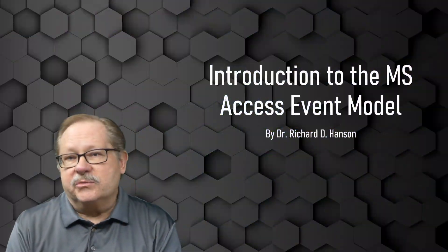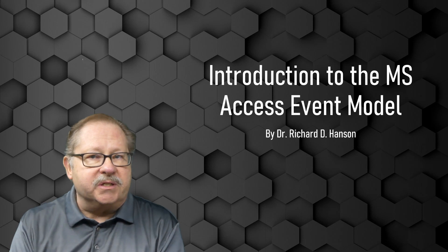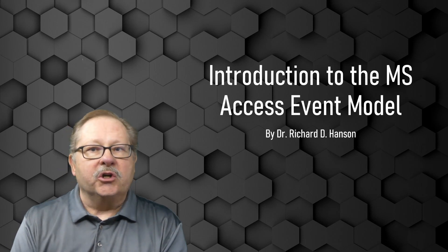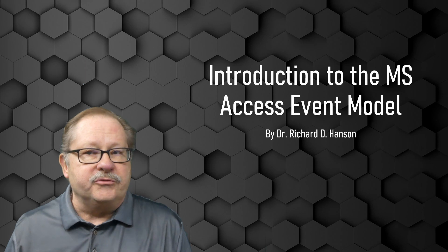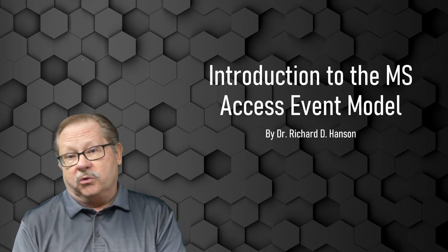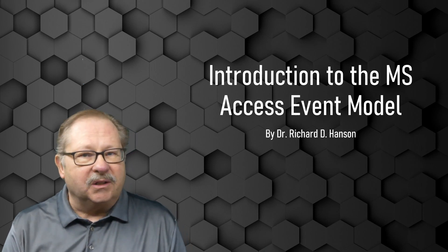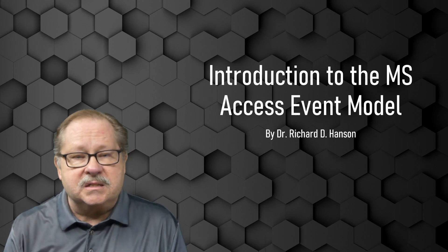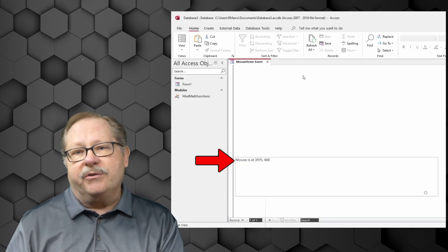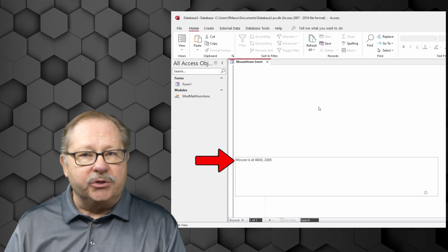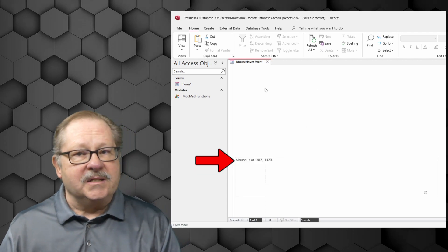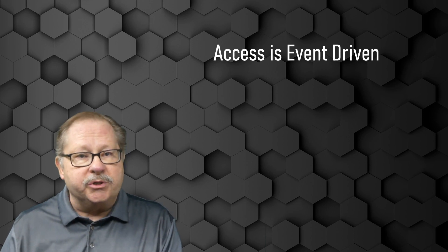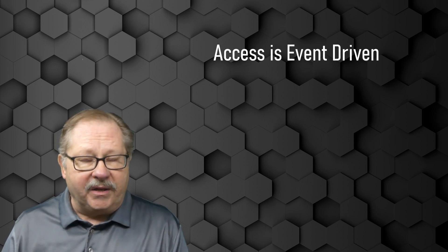An access event really is the result or consequence of some user action. An access event occurs when a user moves from one record to another in a form, closes a report, clicks a command button on a form, or several other tasks. Even moving a mouse generates a continuous stream of events.